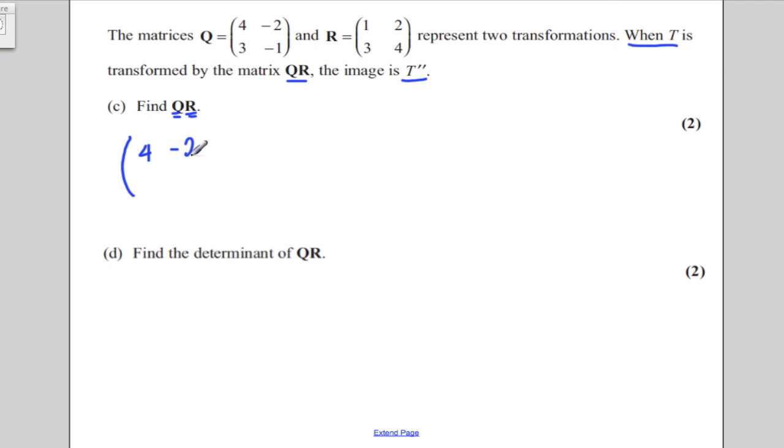It's just saying take matrix Q and multiply it by matrix R in the order seen. So, all you have to do is 4, negative 2, 3, negative 1, and you're multiplying that by 1, 2, 3, 4. As simple as that. So, it's just a case of some matrix multiplication. 4 times 1 is 4.